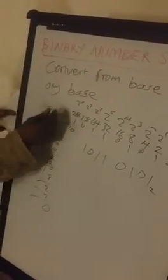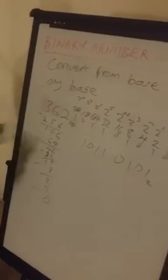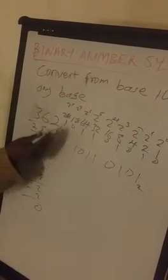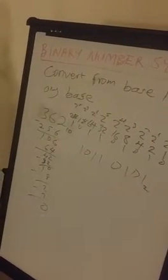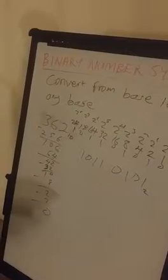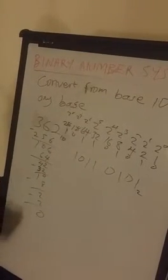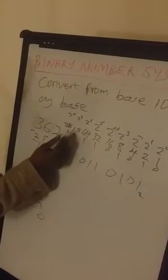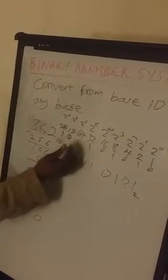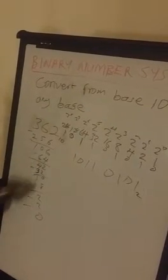If you have 362, you check 2 raised to the power 9 which gives 512. Since 512 is greater than 362, you put 0 there. Then you take 256 — since you can take 256 from 362, you put 1 there and subtract: 362 minus 256 equals 106. Next, you can't subtract 128 from 106, so you put 0 there.